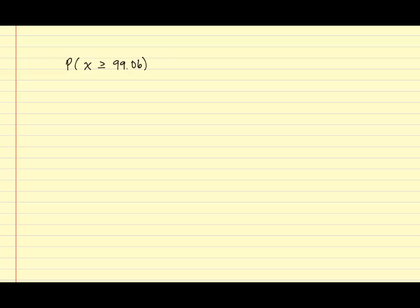To find the probability, we're going to first convert x to a z-score and then use the normal table to find the probabilities. Recall the z-score formula is the following: x minus x-bar over s.